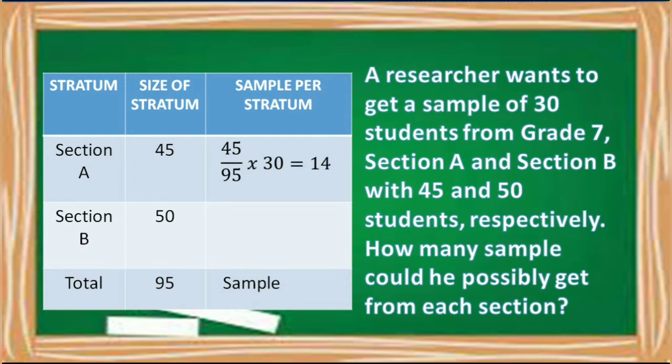Then, proceed to section B. 50 divided by 95. Then, times 30,